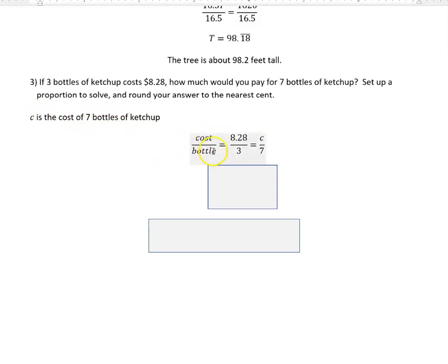I'm going to compare the cost to the bottles. When I bought three bottles, it cost eight dollars and 28 cents, so my cost 8.28 over my bottles three. The next thing I know is I have seven bottles but I don't know the cost. So again, I want to write cost and bottle over here, make sure cost is always on the top and bottles always on the bottom.